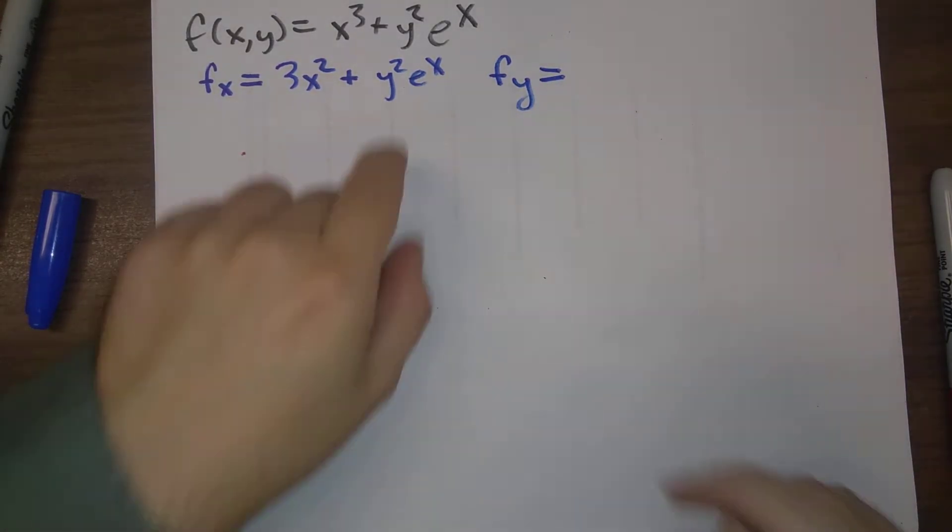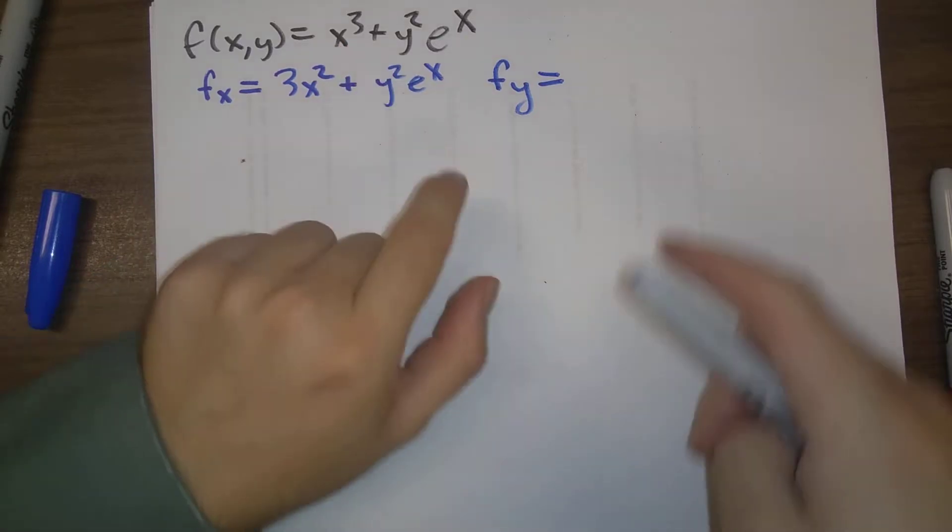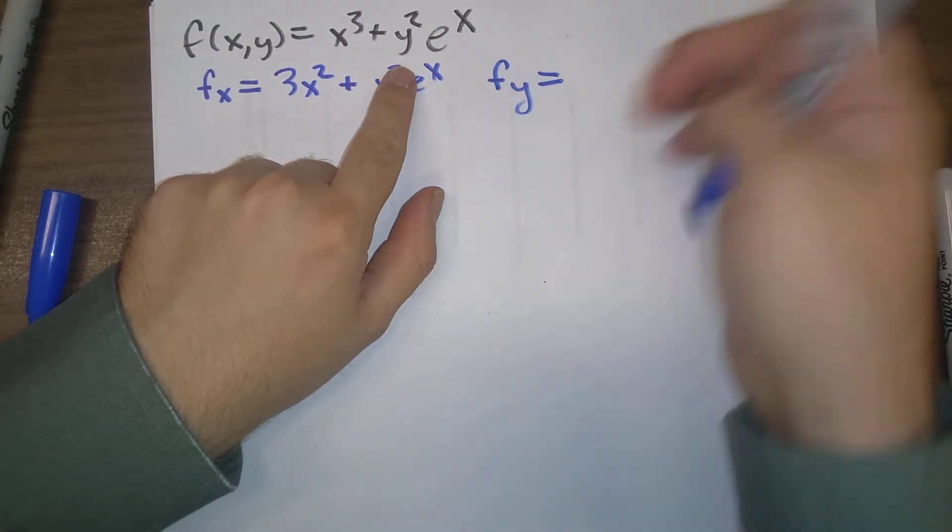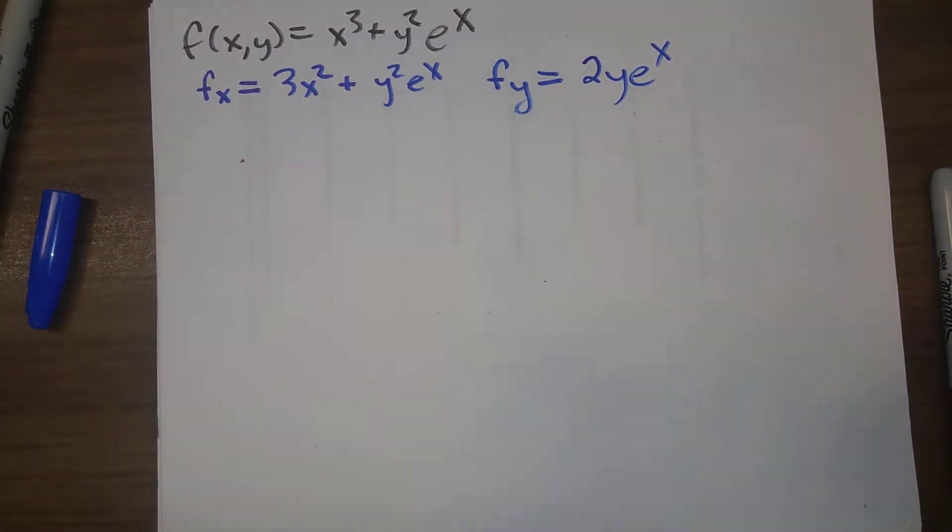The partial derivative with respect to y, the derivative of x^3, that's a constant when y looks at it. So the only thing we take a derivative of here is 2y, e^x stays as a constant.